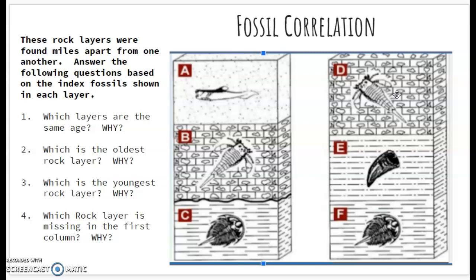Question two asks, which is the oldest rock layer? Now before we get to questions two and three, which is the youngest rock layer, let's just remind ourselves of the law of superposition. The oldest rocks are on the bottom and the youngest rocks are on the top.